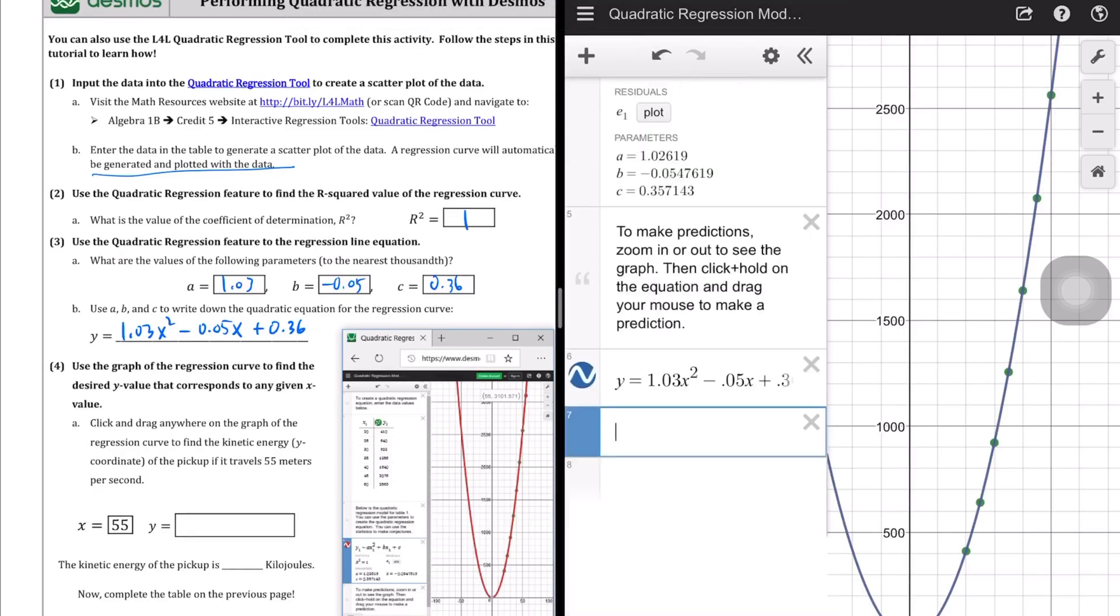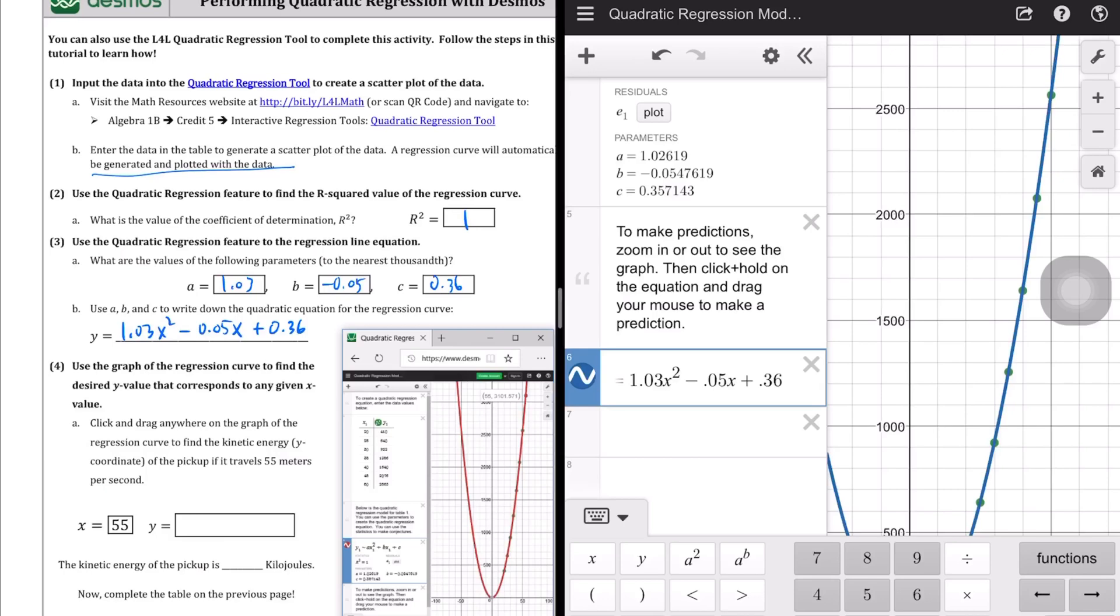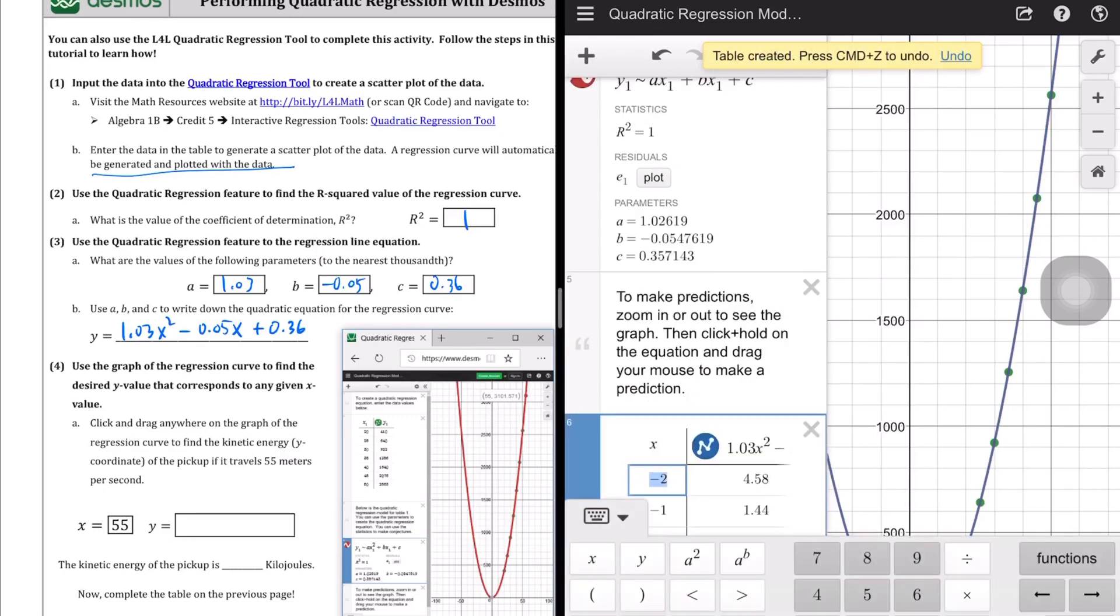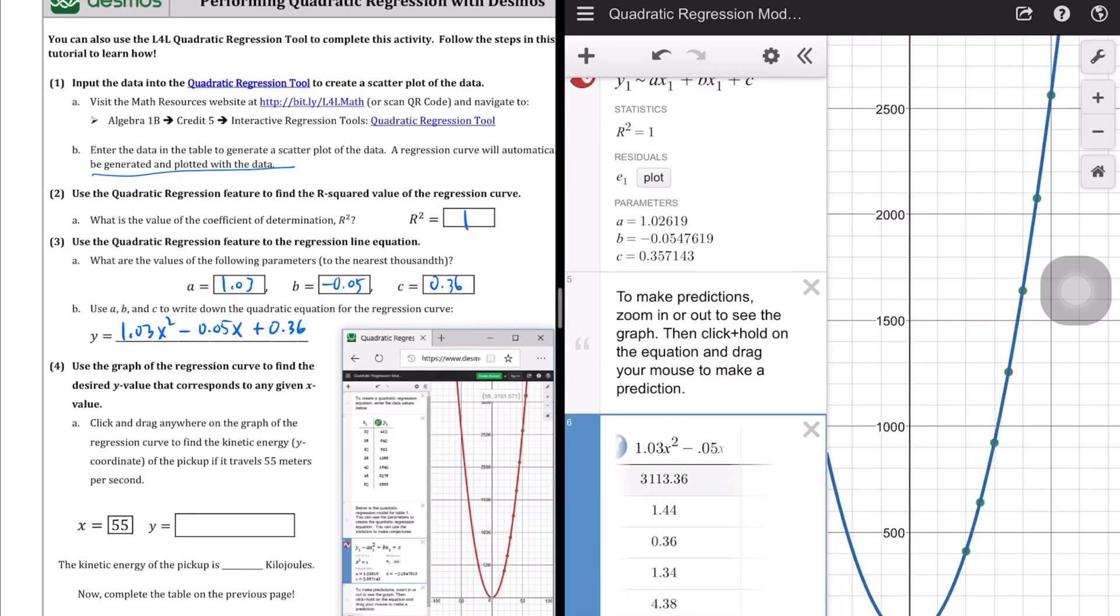And so, let's see. Let's see if we can predict what it'll be at 55. So Desmos has this really interesting tool where you can create a table out of those values. And we want to know, when x equals 55, what will it be? And we'll see here that when x equals 55, based on this equation we wrote, we get 3,113.36.